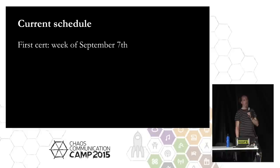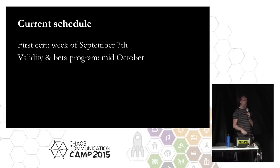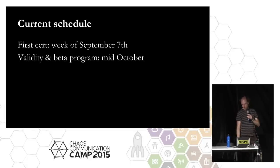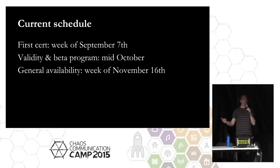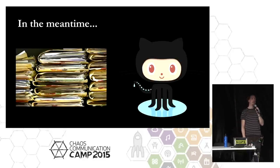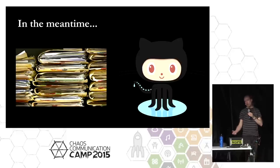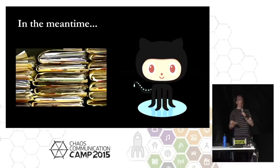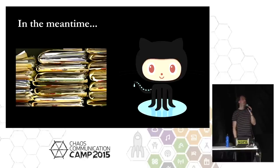The current schedule is to have the first certificate in the week of September 7th. Those certificates will become valid in web browsers via a cross-signature from Identrust in mid-October. And then everyone in this audience — everyone on the internet — will be able to use it from the week of November 16th. In the meantime, if you'd like to help: we're dealing with audits and bureaucratic requirements for getting CA validity, but we're also coding on GitHub, building out both clients and servers. There's lots of places where if you're interested in hacking on this stuff, you can come and work with us.